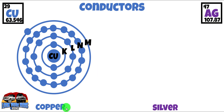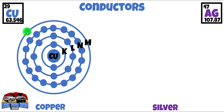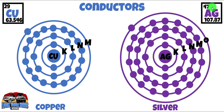Now let's check our conductors. I've chosen copper and silver as two examples. Copper has an atomic number of 29, so there are 29 positively charged protons in the nucleus and 29 electrons orbiting in the various shells. In the valence shell M, there is one electron, also known as the free electron. Silver has an atomic number of 47, and again in shell O — the valence shell — it only has one electron, also known as the free electron. You'll find that's the case with good electrical conductors: they have very few electrons in that outer valence shell.